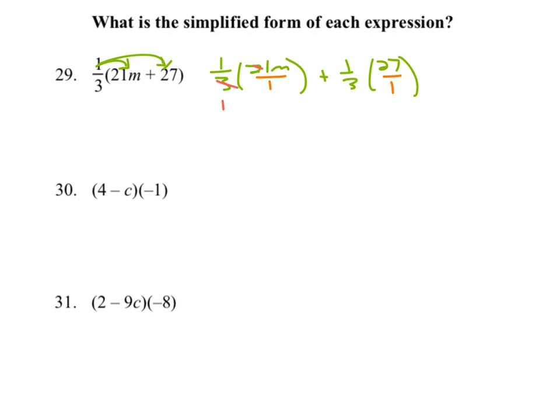Well, this and this can both be divided by three. So you get a one here and you get a seven here or seven M there. So that multiplies together to be one times seven is seven times M, seven M plus.